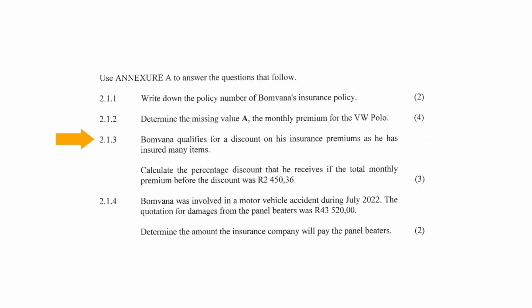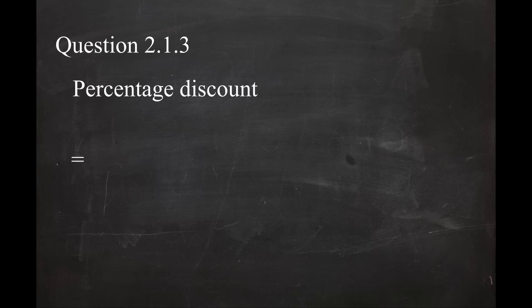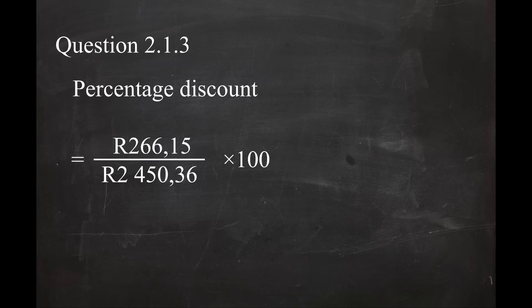In question 2.1.3, it is stated that Bomvana qualifies for a discount on his insurance premiums as he has insured many items. You have to calculate the percentage discount he receives if the total premium before the discount was 2,450.36 cents. From Annexure A, the total discount is given as 266.15 cents. This value as a percentage of the monthly premium before discount is 266.15 divided by 2,450.36 multiplied by 100, and this equals a percentage of 10.86%.